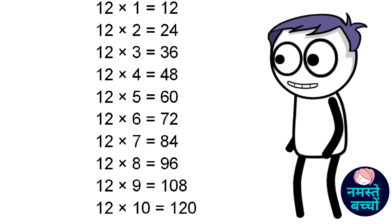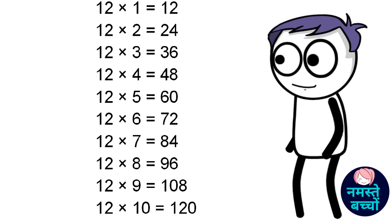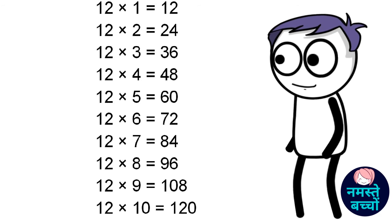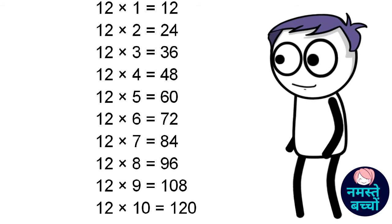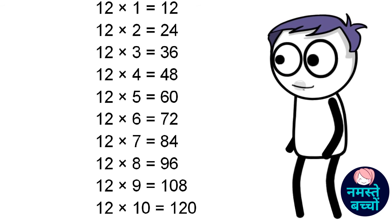Twelve fours are forty-eight. Twelve fives are sixty. Twelve sixes are seventy-two. Twelve sevens are eighty-four.